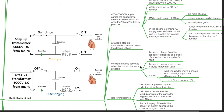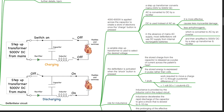The defibrillator circuit: 4000 to 6000 volts is applied across the capacitor to create a store of electrons once the charge button is pressed. A step-up transformer converts mains 240 volts to 5000 volt AC. AC is converted to DC by a rectifier. DC is used instead of AC as it is more effective, causes less myocardial damage, and is less arrhythmogenic.